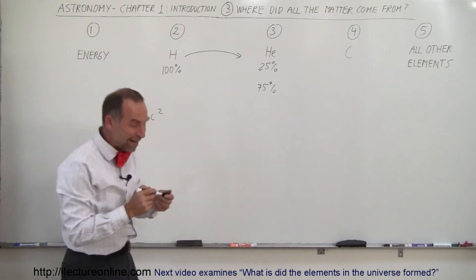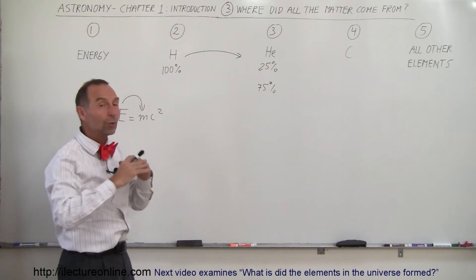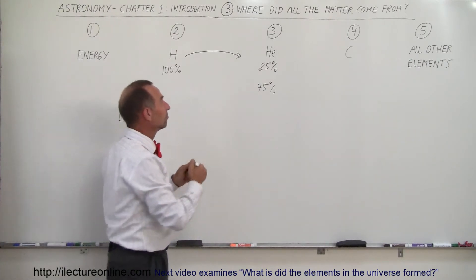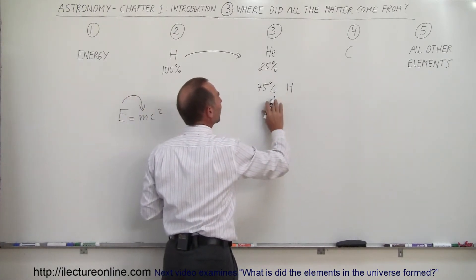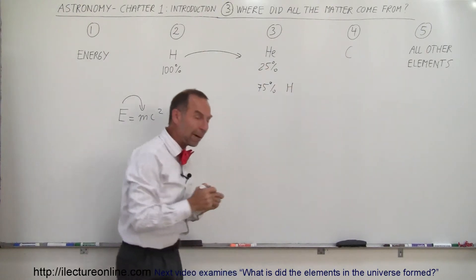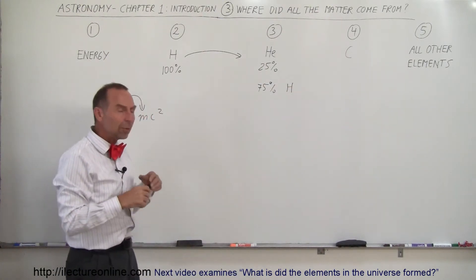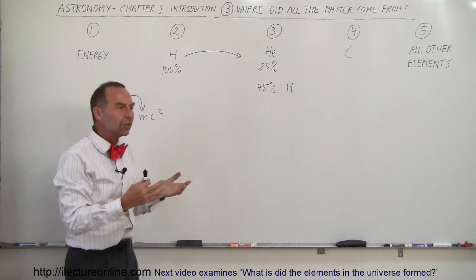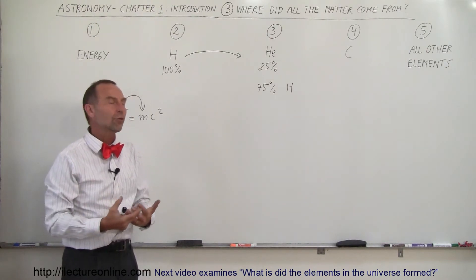So then, for many millions of years, the only matter that existed in the universe was hydrogen, and I should put hydrogen behind it, 75%, and helium, about 25%. And they would remain like that for millions of years until stars began to form.